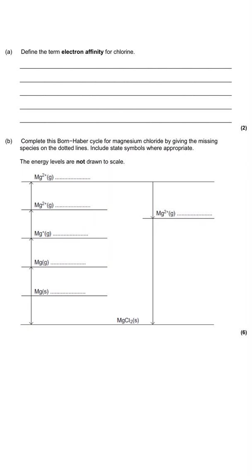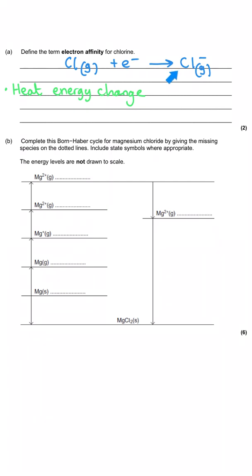In this video we're going to take a look at a 15-mark question to do with Born-Haber cycles. The question starts by asking us to define the term electron affinity for chlorine. There are quite a few definitions you need to remember for this topic, and the way I choose to remember electron affinity is through an equation. Because this question was asking about chlorine, I've written an equation with chlorine in it. Now we've got the equation, we can see what is happening: one mole of chlorine atoms is turning into one mole of chloride ions.